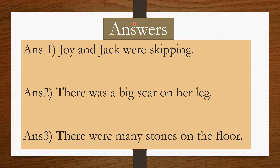Here are the answers. The first sentence is: 'Joy and Jack were skipping.' The second sentence is: 'There was a big scar on her leg.' The third sentence is: 'There were many stones on the floor.' I hope you all got your answers correct.